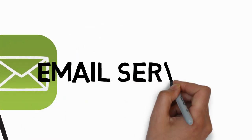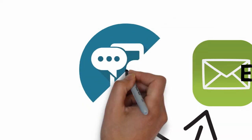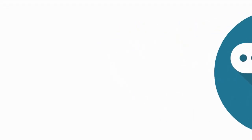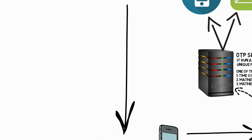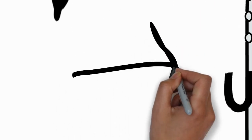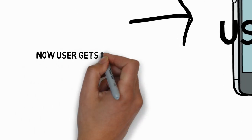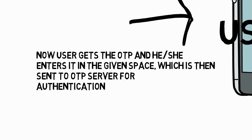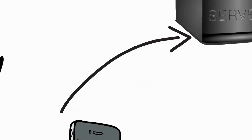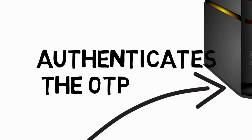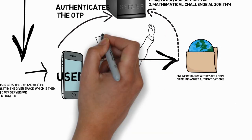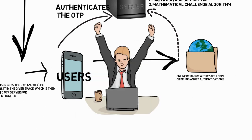Once the OTP is generated, the server decides the delivery mechanism for the user. The vendor needs to be subscribed to a service — either email, bulk SMS, phone call, or all of them. Once the method is decided, the OTP is sent back to the user. When the user receives the OTP, they enter it in the given space and it is sent back to the OTP server. The server then authenticates it against the generated OTP, it matches, and the user gets access to the resource they were trying to reach. That's how OTP functions.